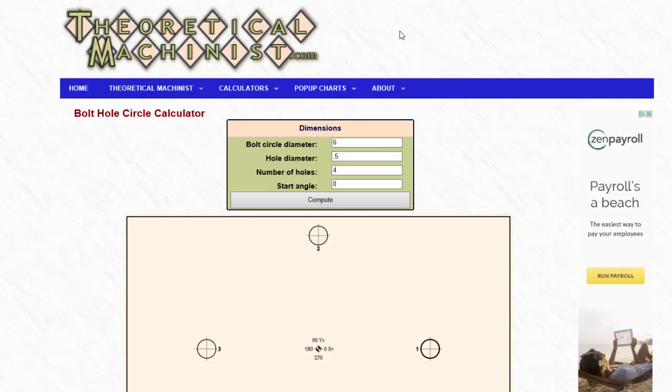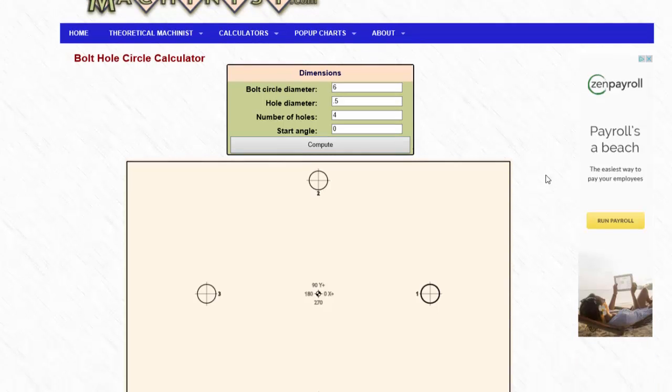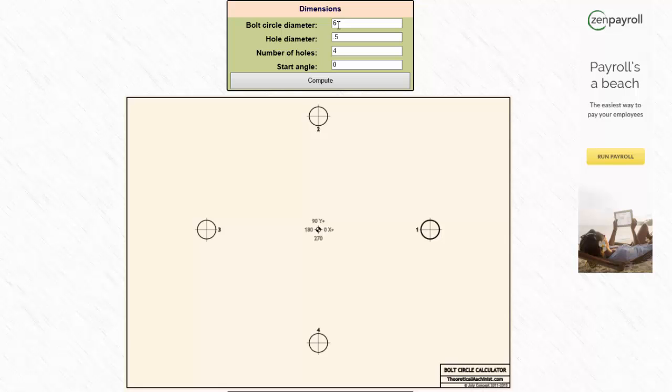If you go to theoreticalmachinist.com, you will find a bolt hole circle calculator that will make calculating the x and y locations very easy. The way it works is you simply enter the bolt circle diameter, so let's make that 10 inches. Then the hole diameter, let's make that 0.375. We will give it 10 holes at a start angle of 0 degrees. And we just simply click compute.